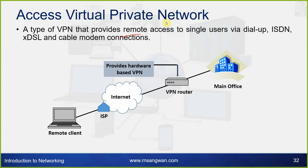Access virtual private network is a type of VPN that provides remote access to a single user via dial-up, ISDN, DSL, or cable modem connections. The remote client uses an internet service provider dial-up connection, then uses a VPN router to connect to the main office, providing hardware-based VPN.